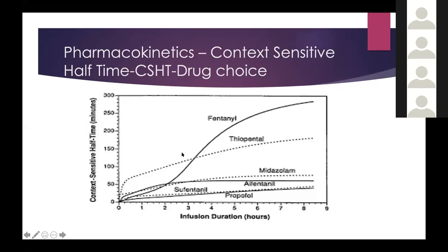Propofol: after give or take eight hours of infusion, if you stop it, it only takes 40 minutes — the decrement time — to emerge and wake up. Drugs like fentanyl are avoided in TIVA TCI because after two hours of fentanyl infusion, it takes more than 250 minutes for a patient to wake up. So the drug choices for TIVA must have a short context-sensitive half-time, meaning once you stop the infusion, waking up is quick. The drugs that fit this definition, ideally used worldwide, are propofol and remifentanil. Alfentanil is starting to be used but mainly in ICUs in the West.